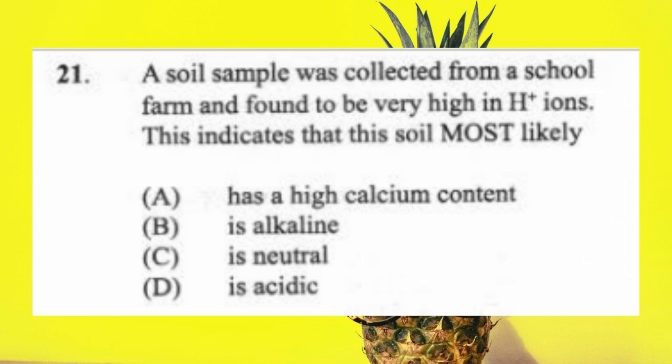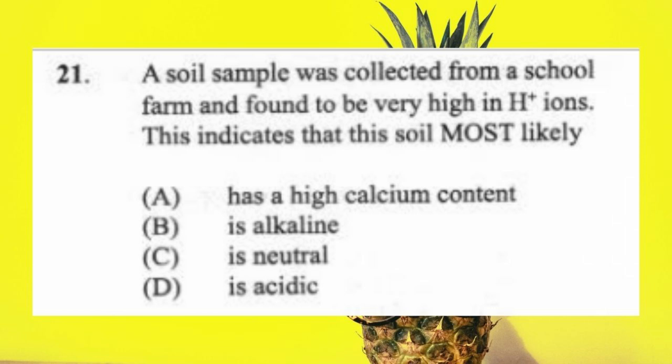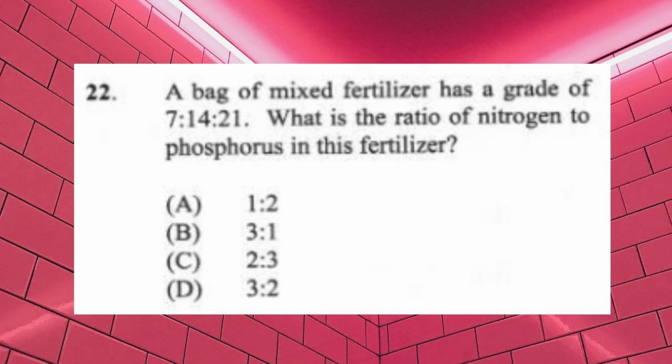Question 21: A soil sample was collected from a school farm and found to be very high in potential hydrogen ions. This indicates the soil most likely (a) has a high calcium content, (b) is alkaline, (c) is neutral, (d) is acidic. The answer is D, is acidic. The pH stands for potential hydrogen (H+). The more H+ ions in a sample, the more acidic the soil. The fewer H+ ions, the more alkaline the soil.